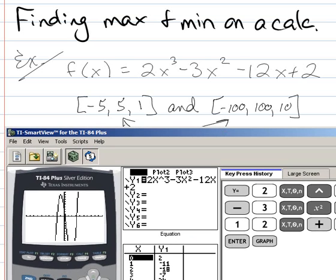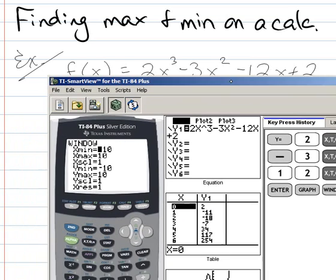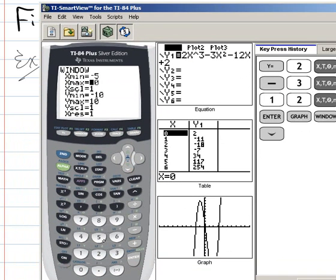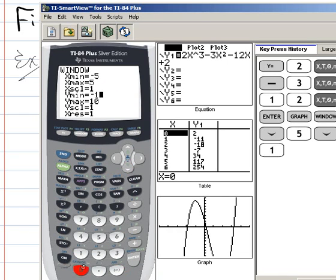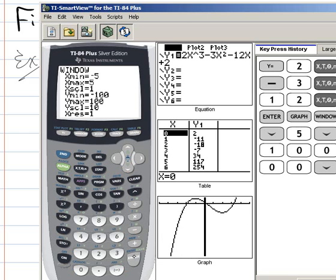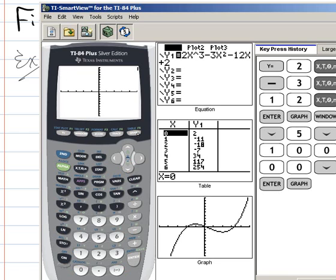So you'll go to the window button and you'll type in negative 5 or whatever it is in this example. Negative 5, 5 and 1 and then negative 100, 100 and 10. And then you'll go back and you'll re-graph it. And now you'll see you have a much better picture of what's going on. It just kind of makes it easier to see.